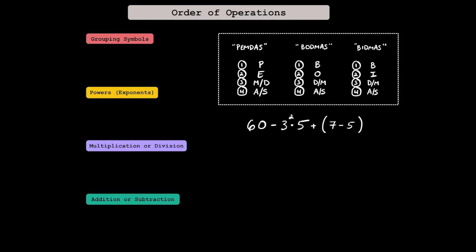Let's start with addition and subtraction. Since addition and subtraction are inverse operations, they're equally important. What about multiplication or division? Since multiplication and division are also inverse operations, they're equally important as well. While you may see multiplication like 5 times 8 using a dot, you could also see it as 5 parentheses 8, which also means multiplication. And for division, sometimes you won't see a division symbol and you'll see a fraction bar instead. That implies division.